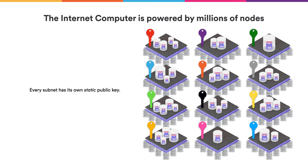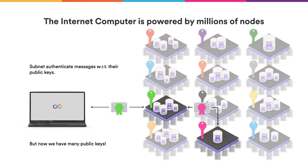So it seems we have many public keys to store to validate responses from different subnets. But that's not quite the case, because there is a special subnet called the NNS subnet, or the Network Nervous System subnet. The NNS subnet orchestrates all the other subnets — for instance, it decides which nodes go to which subnets — and it also certifies the keys of all these subnets. Therefore, each subnet has its own public key, but also a certificate from the NNS subnet on that public key.